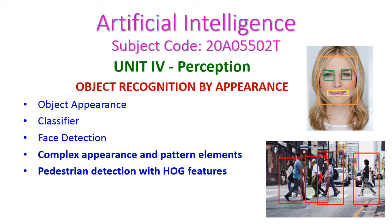In today's Artificial Intelligence class, we will see object recognition by appearance from the 4th unit on perception. We will cover object appearance — how an object appears in an image — then classifiers and their role, and how classifiers are used to detect faces. After that, we will see two subtopics: complex appearance and pattern elements, and pedestrian detection with HOG features.